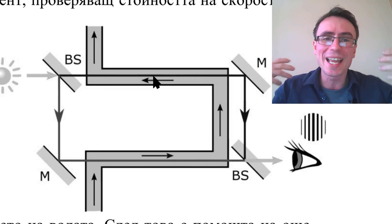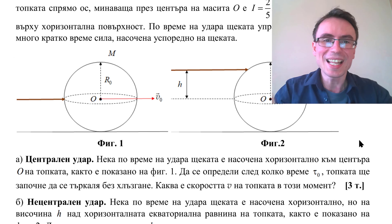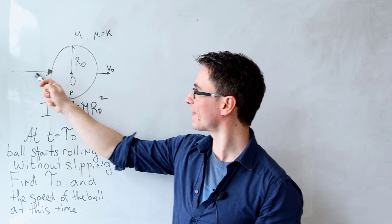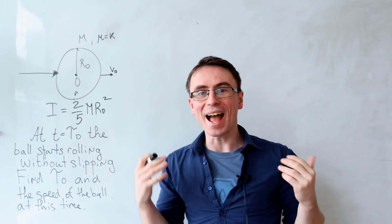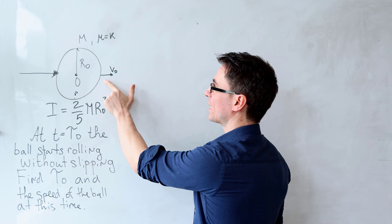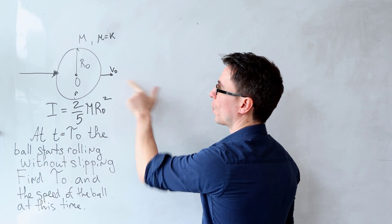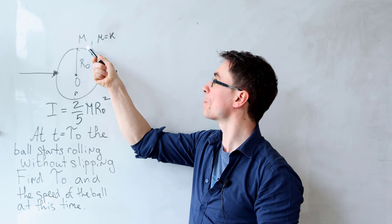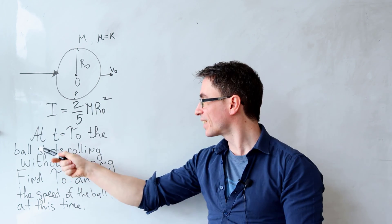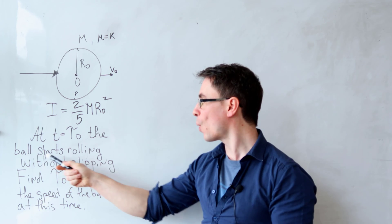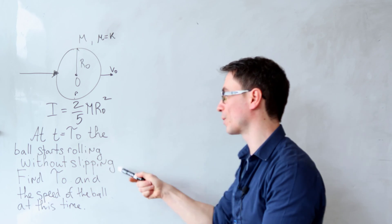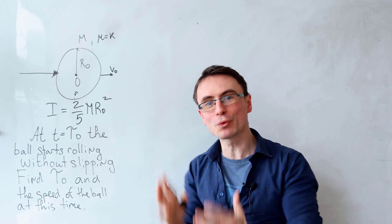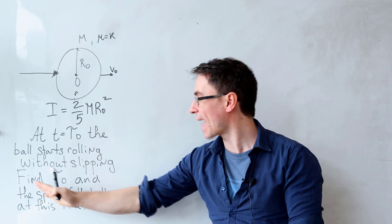Let's solve the very first one. We have a billiard ball that experiences an initial force and afterwards is moving with initial speed v₀. The coefficient of friction is k and its mass is m. At t equal to t₀ the ball starts rolling without slipping. We need to find this time and the speed of the ball at that precise moment.